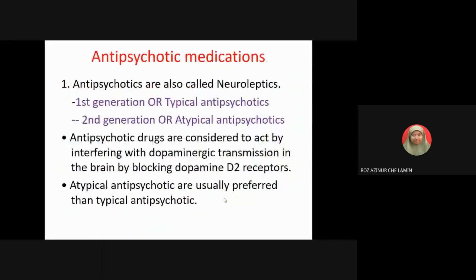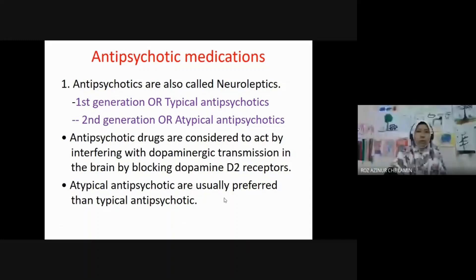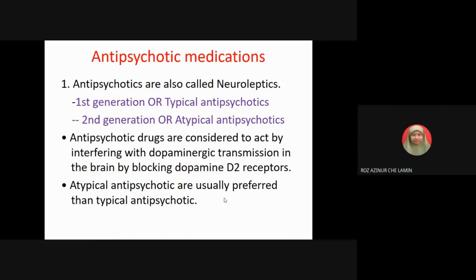There are two types of antipsychotics, also called neuroleptics. The first is first-generation or typical antipsychotics, and the second is second-generation or atypical antipsychotics. Antipsychotic drugs are considered to act by interfering with dopamine transmission in the brain by blocking the dopamine D2 receptors. Atypical antipsychotics are usually preferred over typical antipsychotics.